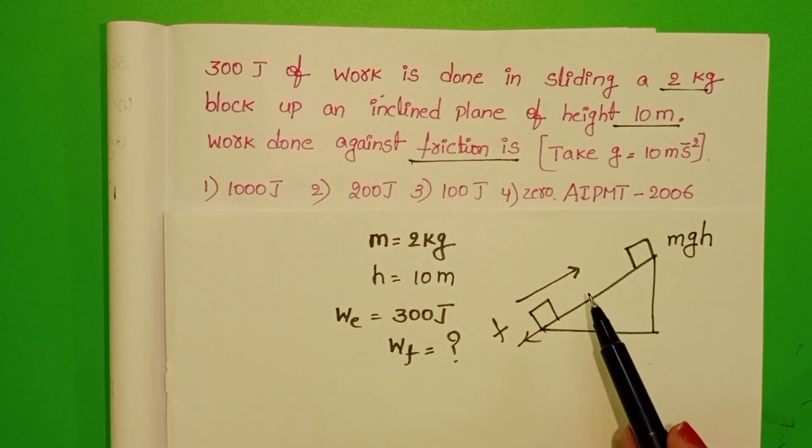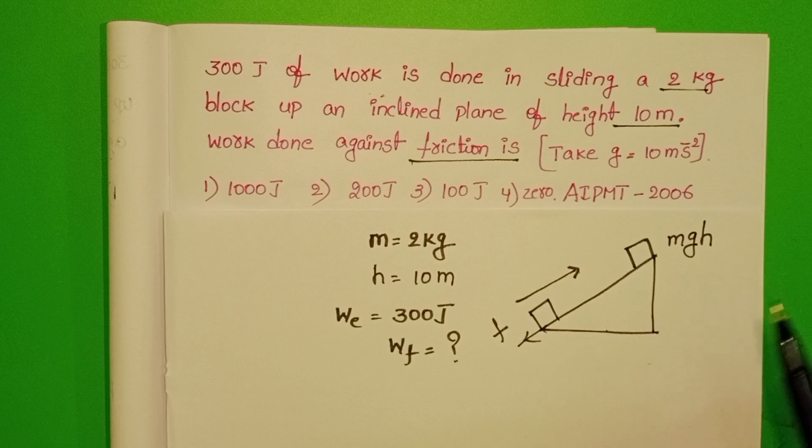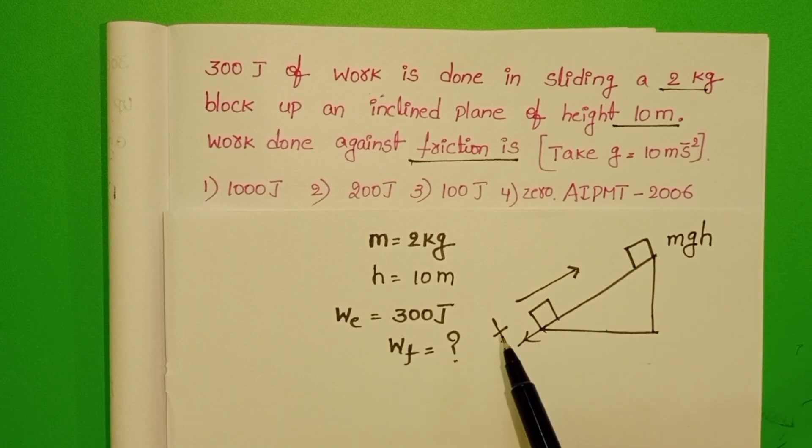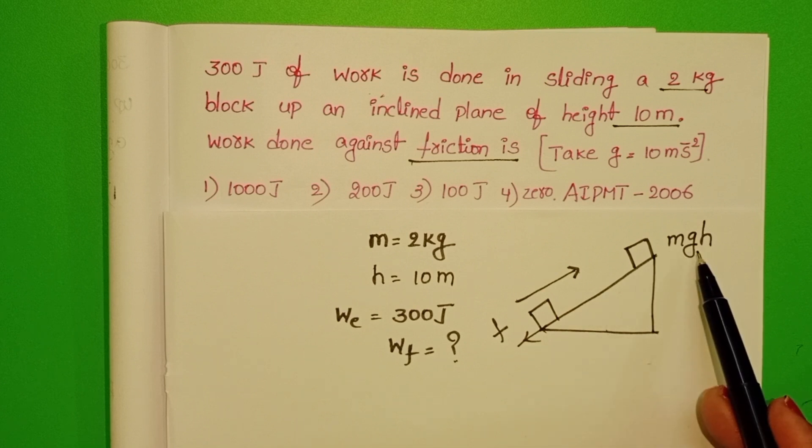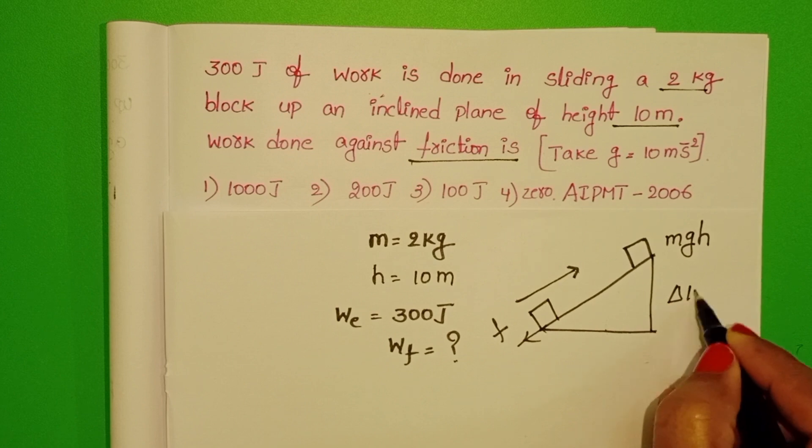Total external energy utilizes in two different ways. One is work done against friction, and second one to gain the potential energy. Here change in kinetic energy is equals to 0.